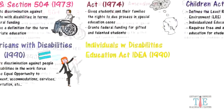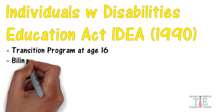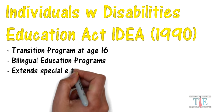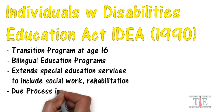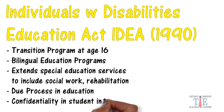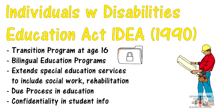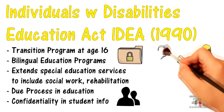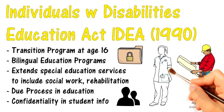Another one of the most important laws is the Individuals with Disabilities Education Act. Key accomplishments include transition programs beginning at age 16, bilingual education programs, and extended special education services to include social work, rehabilitation, and more. It also addresses due process in education, confidentiality, and student information. The transition programs are designed to help children get jobs when they exit high school, and more provisions are added to ensure confidentiality in keeping student records.